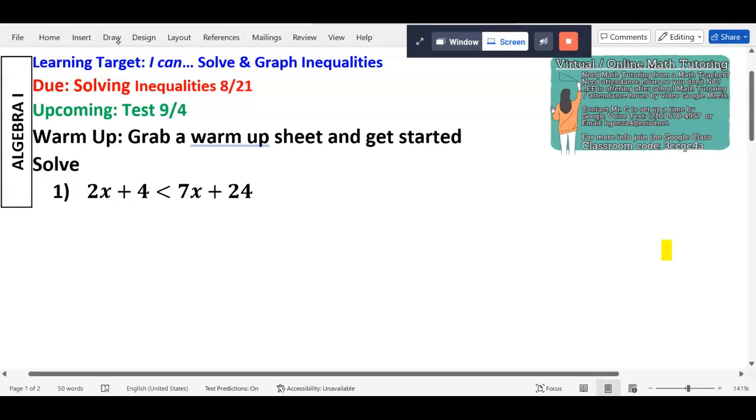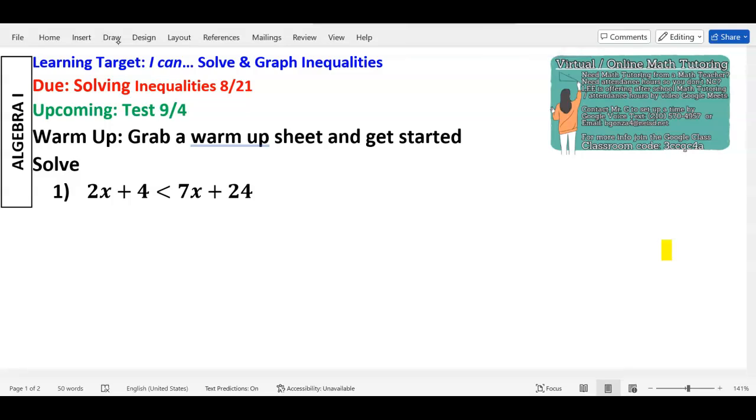Solving number one here. It's an inequality because you see that less than sign, right? But there are two Xs, one on each side. So when we're solving and X is on both sides, y'all remember we get rid of the smaller X, which happens to be 2X. So let's get rid of a positive 2X, minus 2X on both sides. 2Xs cancel. Bring down 4 less than 7 minus 2 is 5X plus 24.